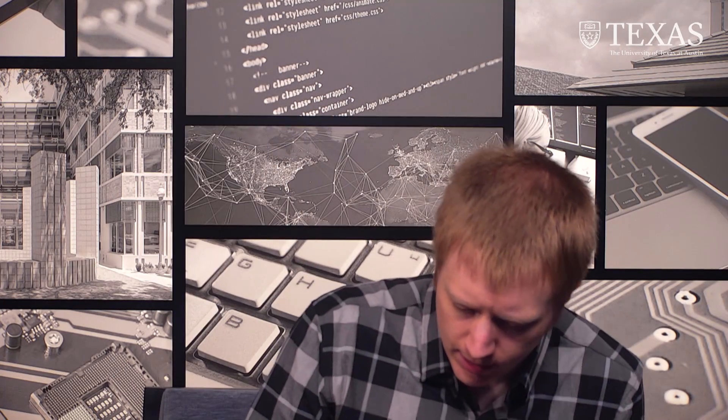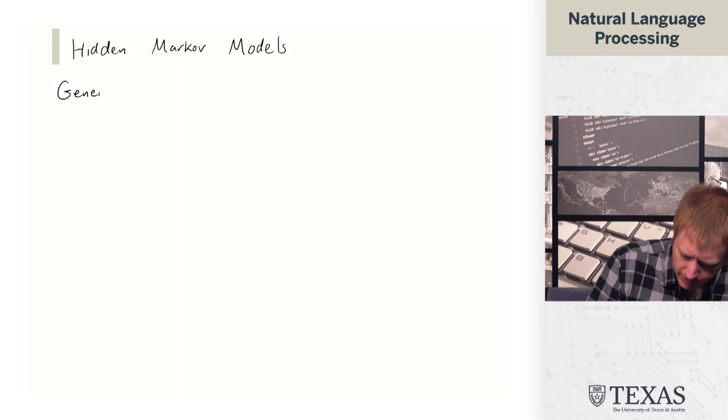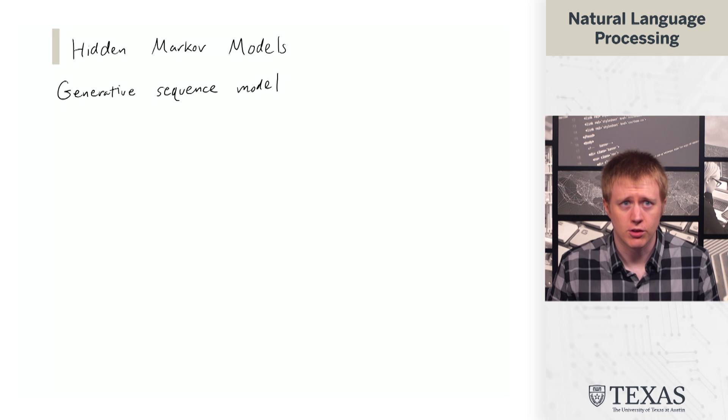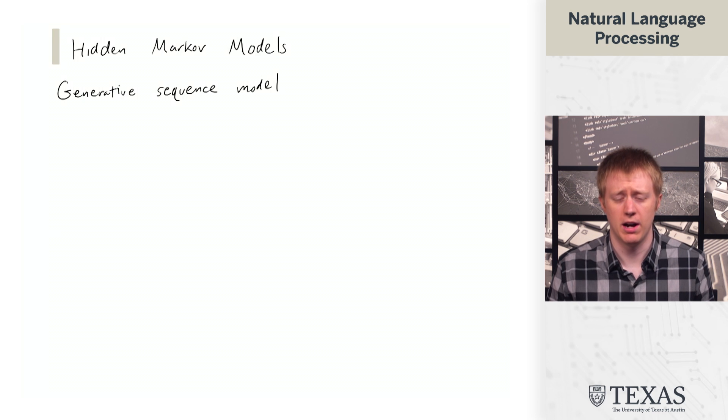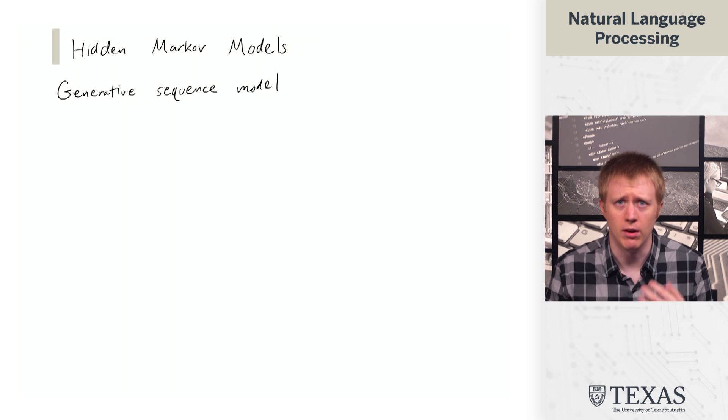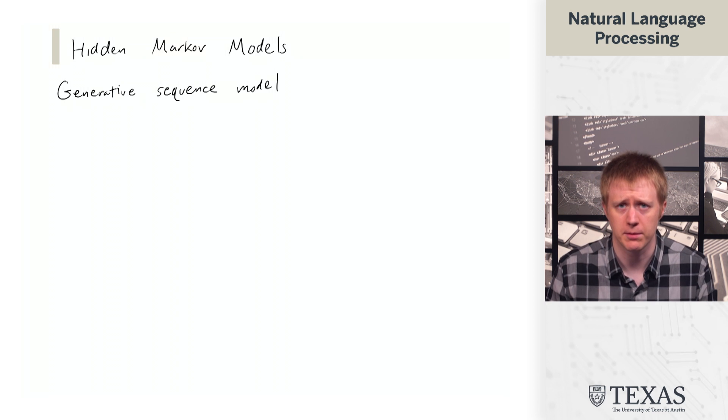and what it can do. So hidden Markov models are a generative sequence model that is going to allow us to represent tasks like particularly tagging tasks like part-of-speech tagging in a nice modeling framework.